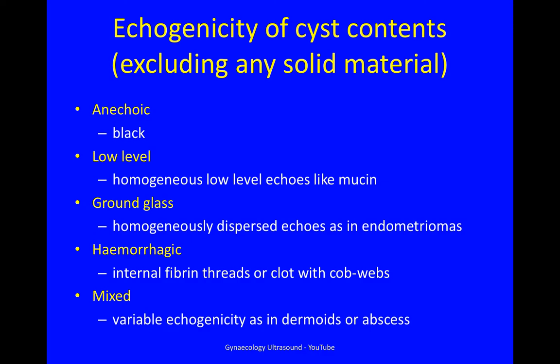The echogenicity of the cyst, excluding any solid material of course — the cyst contents can either be anechoic, which is black, or low-level echogenicity, where there are some homogeneous low-level echoes, a bit like mucin.